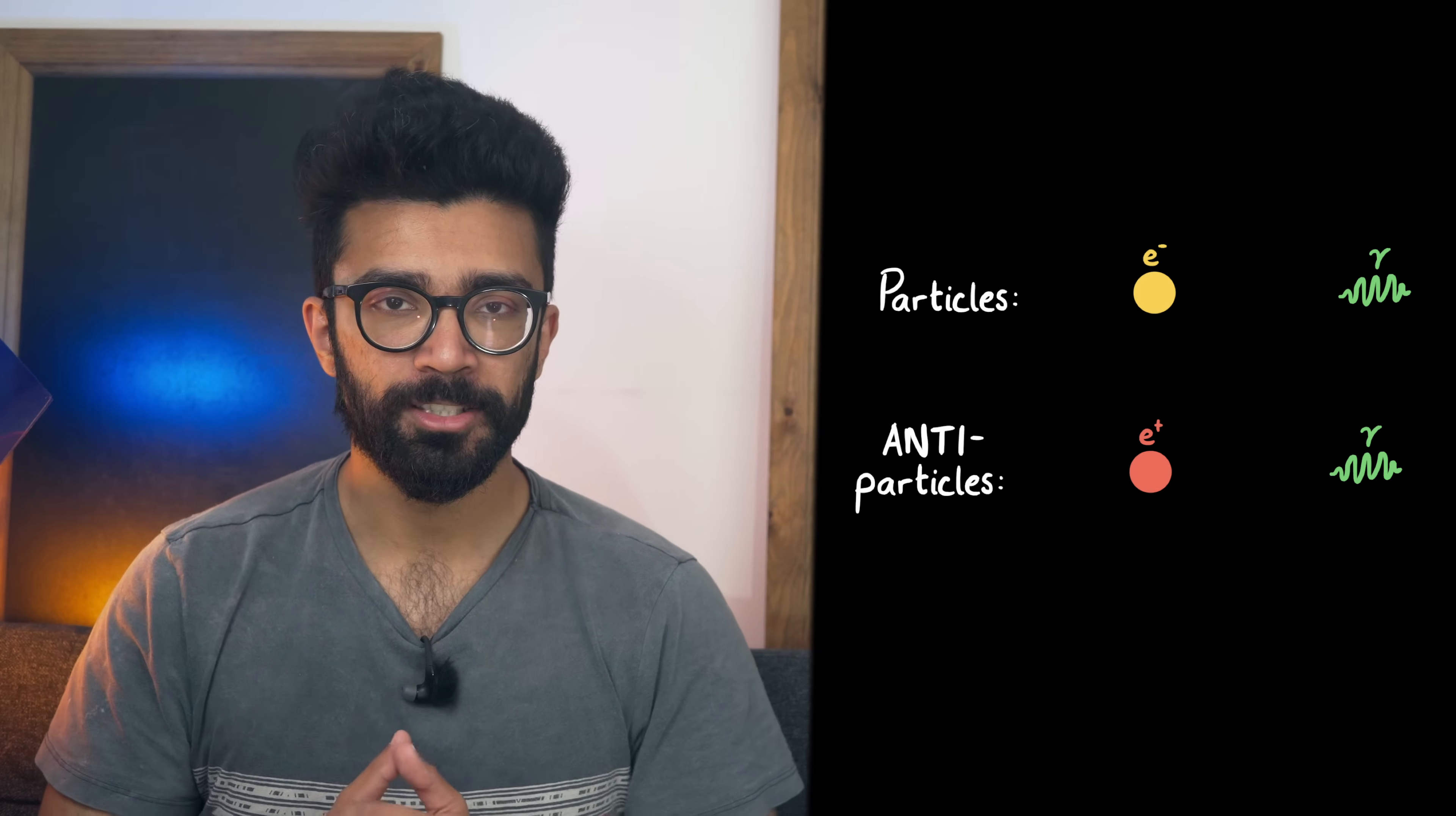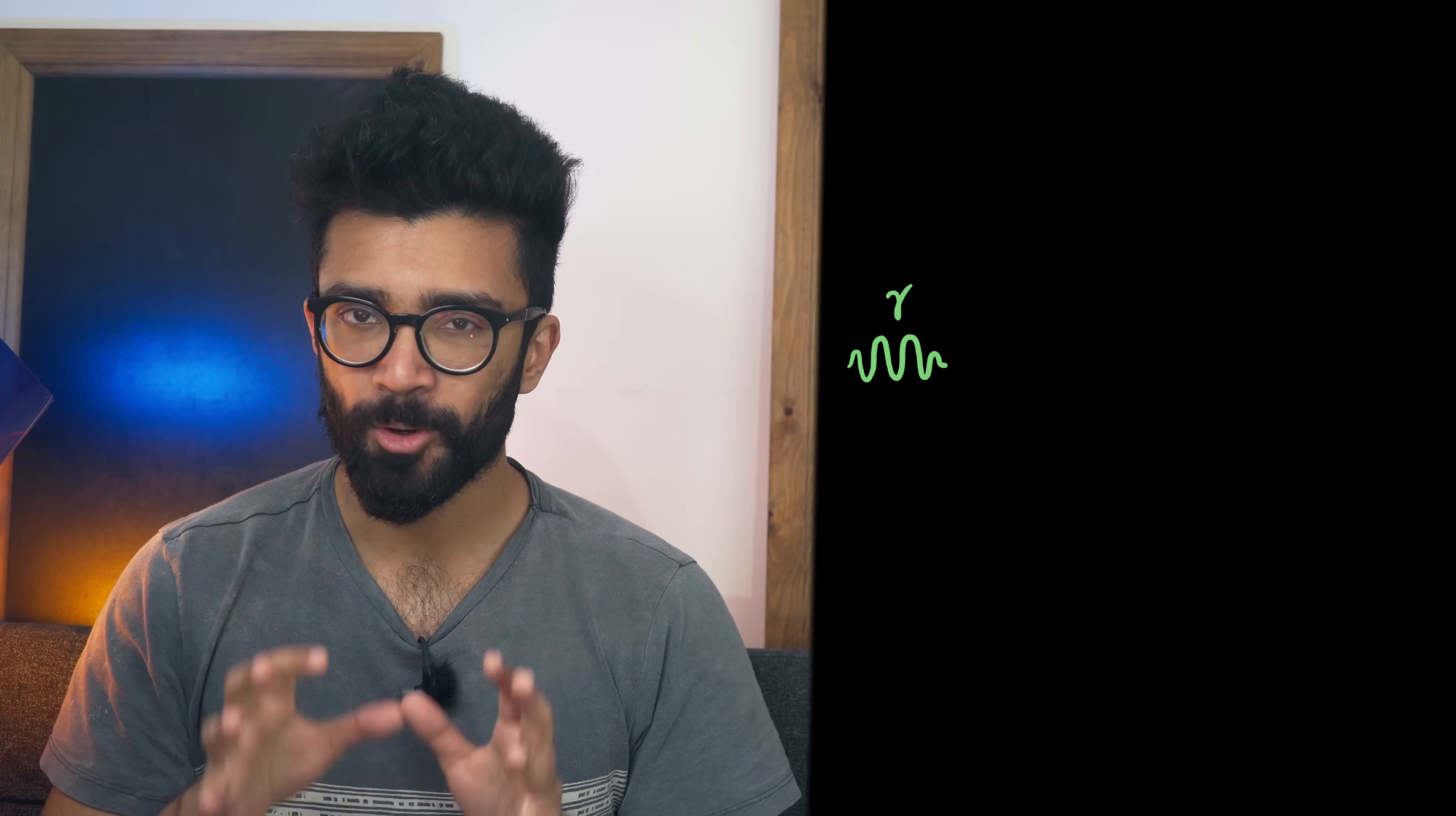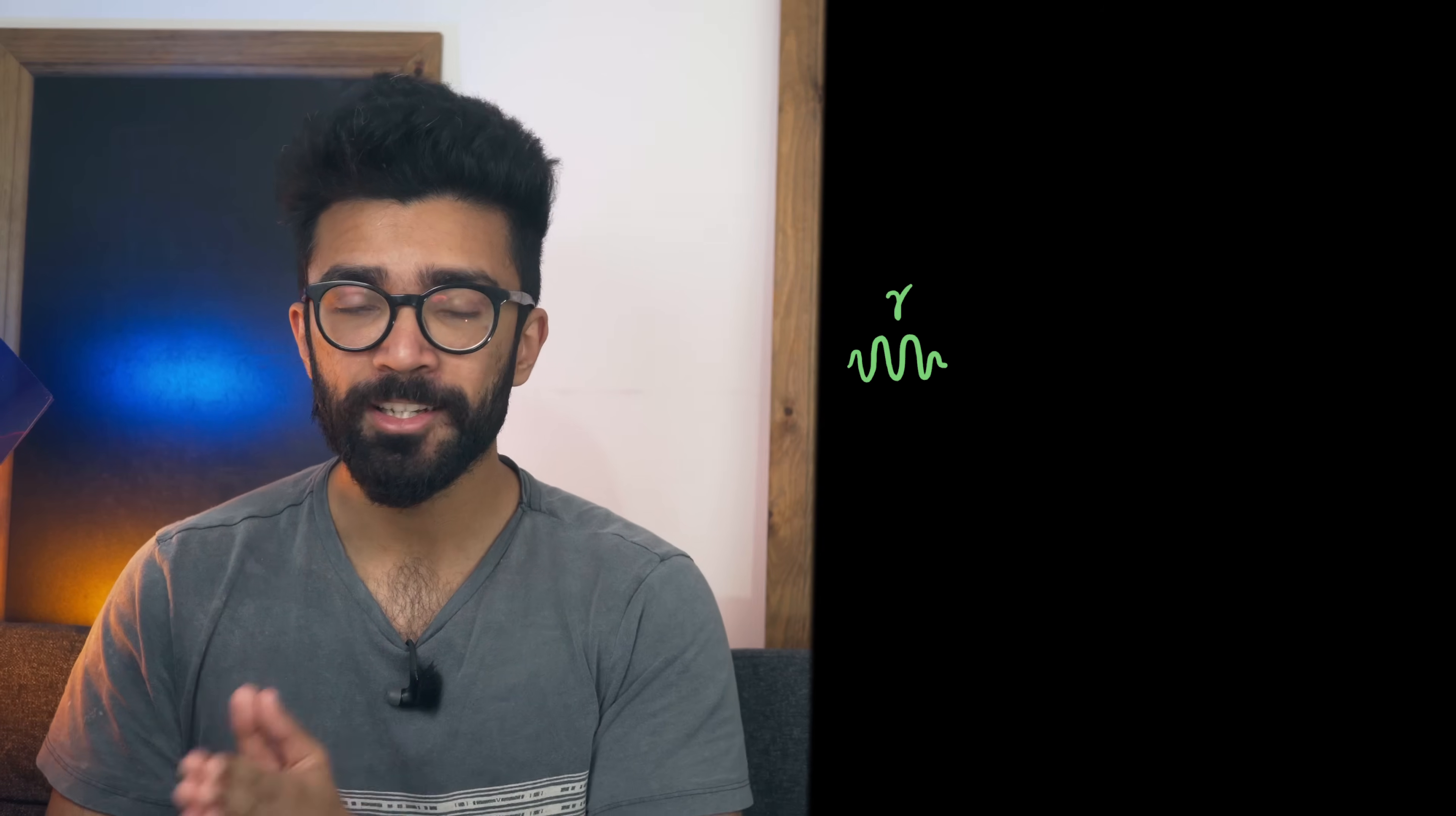We'll look at what we mean by antiparticles shortly but first let's consider a photon. That's a particle corresponding to electromagnetic waves. In other words it's the particle form of light. Now photons always travel at the same speed through a vacuum. They travel at the speed of light.